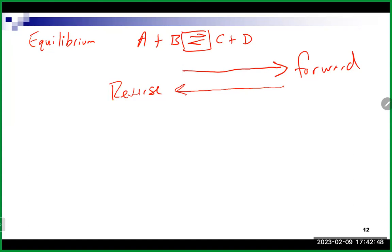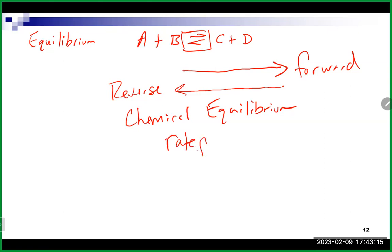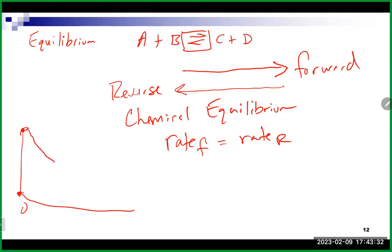What will eventually happen is the reaction will reach chemical equilibrium. Chemical equilibrium does not mean we have the same amount of reactants and products — it refers to the rate of the forward and reverse directions. When equilibrium is reached, the rate of the forward direction equals the rate of the reverse direction. Graphically, starting at time zero with all reactants, products build up until everyone levels out.